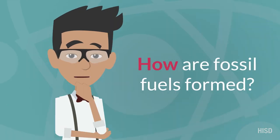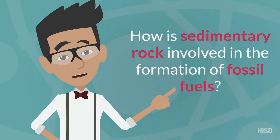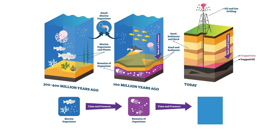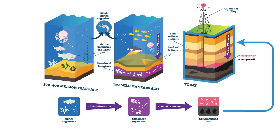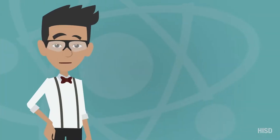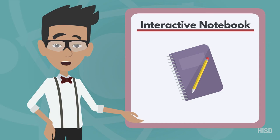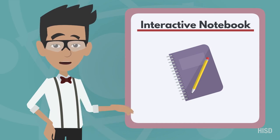So how are fossil fuels formed? How is sedimentary rock involved in the formation of fossil fuels? During the millions of years that have passed, dead plants and animals slowly decomposed into organic materials and formed fossil fuels that are found in sedimentary rock.